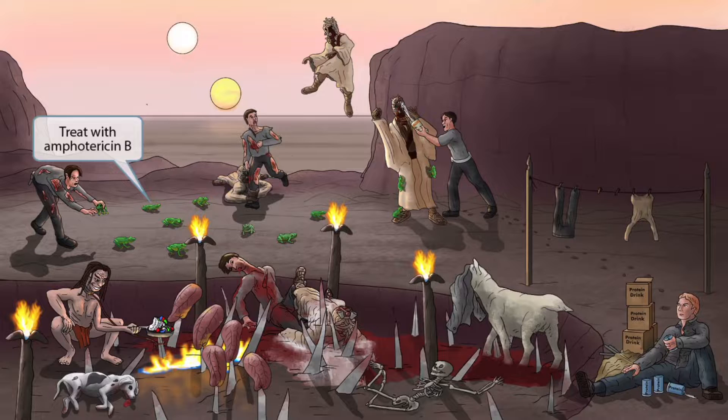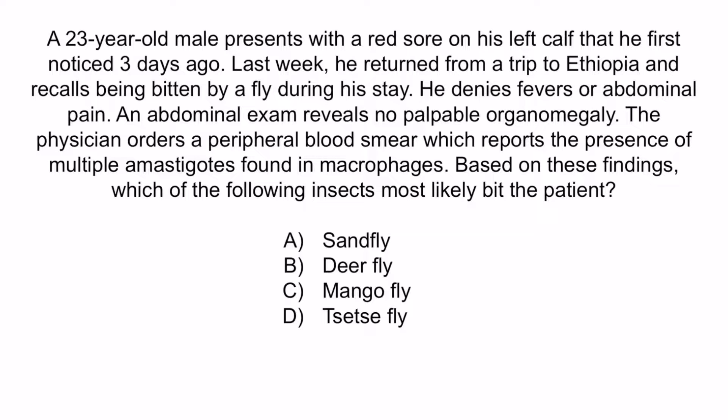Now let's do a question to apply what you've learned. A 23-year-old male presents with a red sore on his left calf that he first noticed three days ago. Last week he returned from a trip to Ethiopia and recalls being bitten by a fly during his stay. He denies fevers or abdominal pain. An abdominal exam reveals no palpable organomegaly. The physician orders a peripheral blood smear, which reports the presence of multiple amastigotes found in macrophages. Which of the following insects most likely bit the patient?